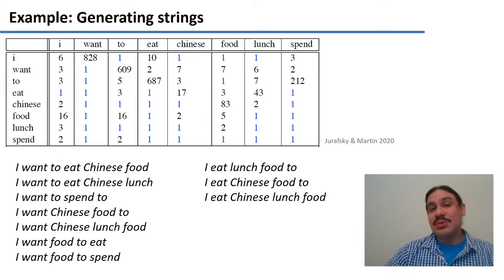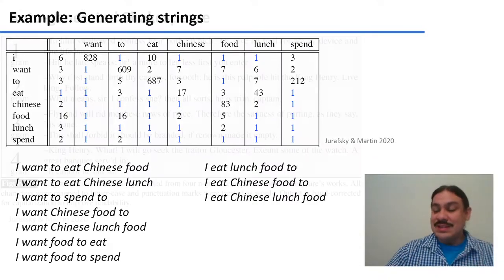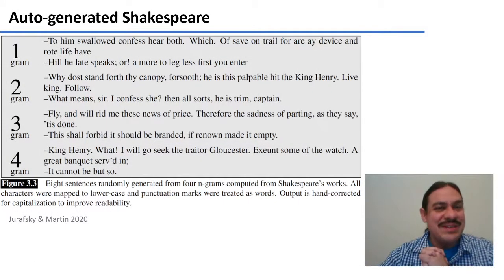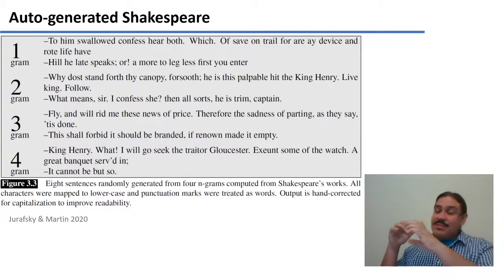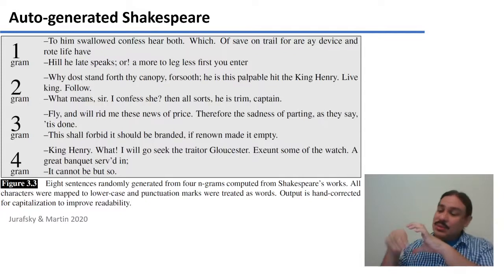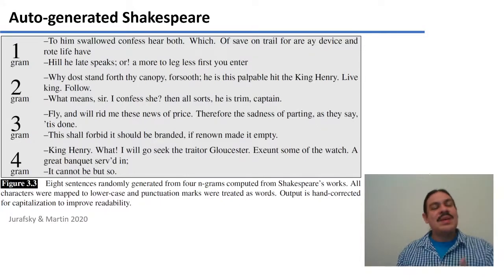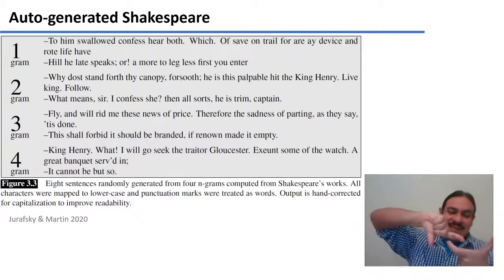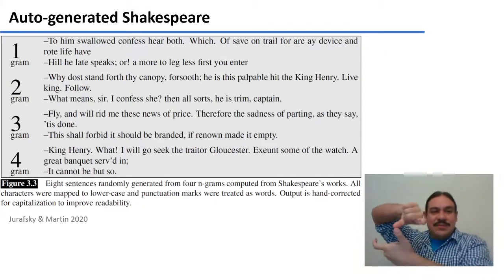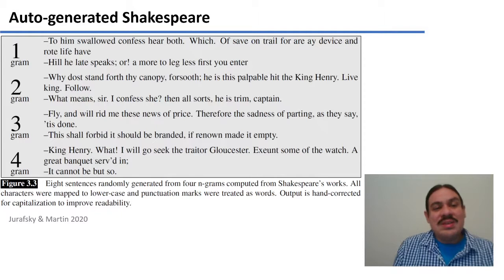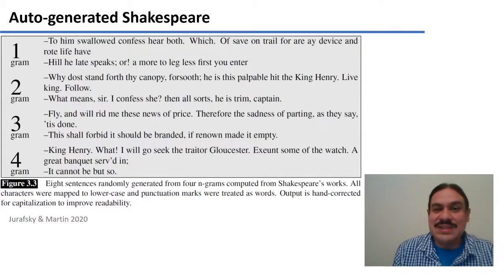So this is a way that the computer can use n-grams to generate sentences of a language. This is how Shakespeare got generated here. If it's a unigram, then it's just choosing random unigrams from a big bag. So the most likely word gets chosen the most often, and so forth. To him swallowed confess you both. This makes absolutely no sense. Bigrams would be exactly what we did. Chains of two words. Why does stand for thy canopy forsooth? This is still not very good. It's mostly gibberish.